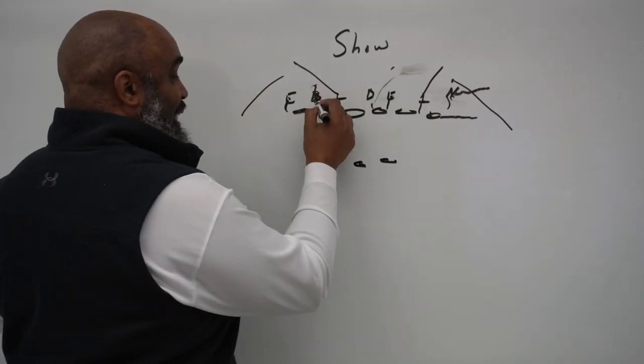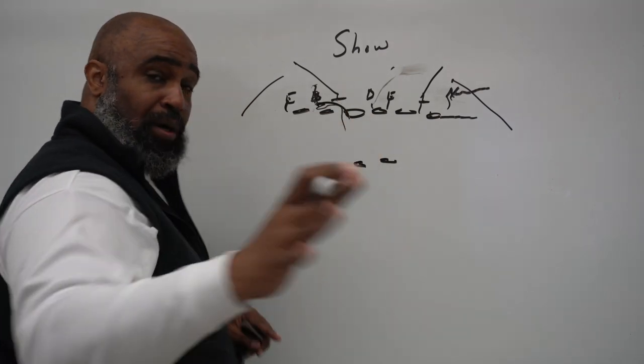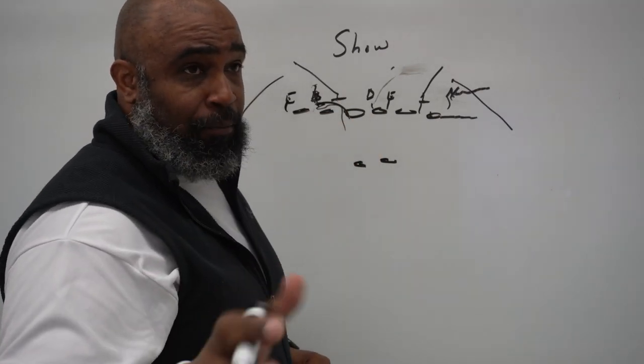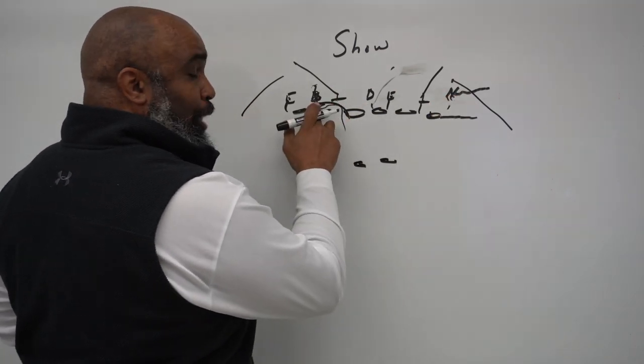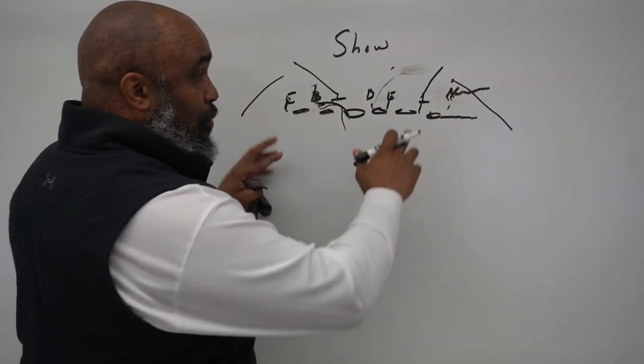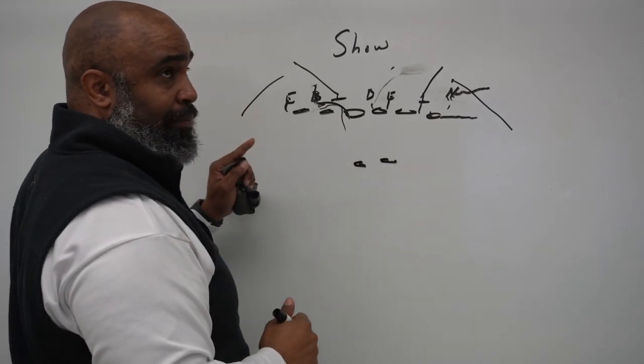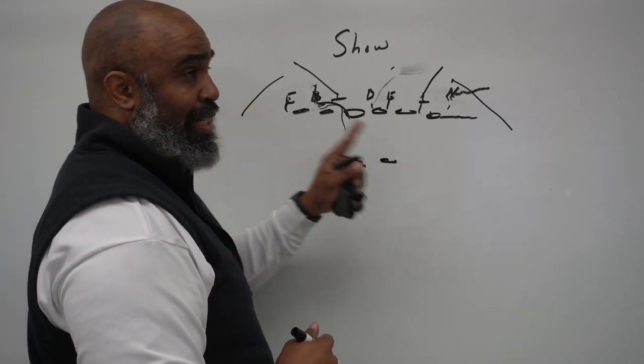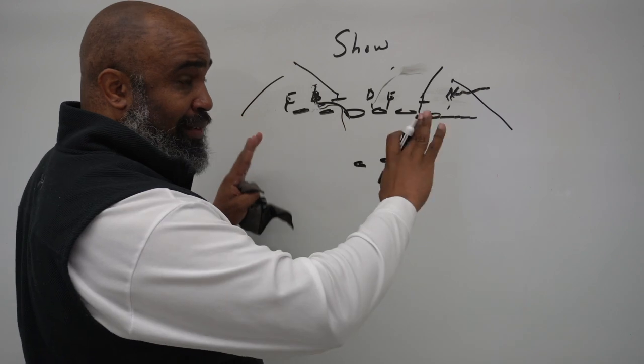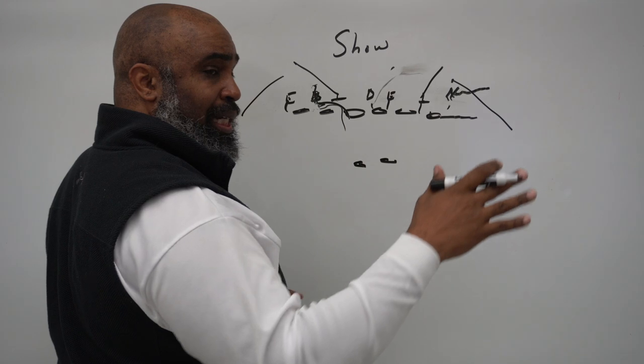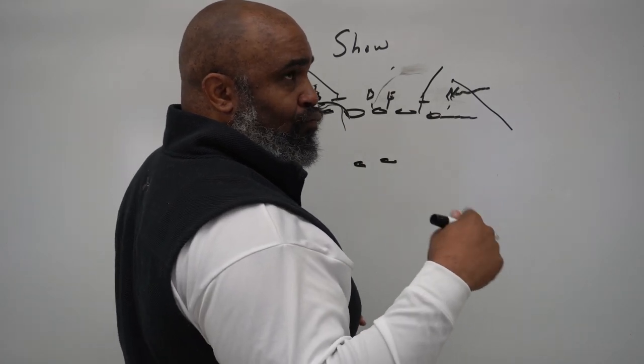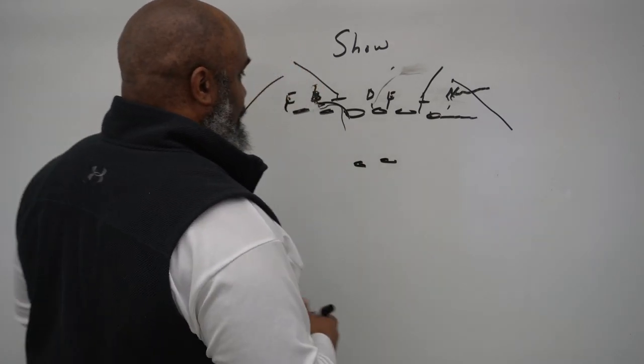And before the season started, if you remember I told you, I thought Kyle Hamilton and Pat Queen were our best blitzers, not knowing what we were going to get from Clowney and Van Noy. But it ended up, Clowney and Van Noy ended up being pretty darn good. But preseason, I thought Queen and Hamilton would be our best blitzers.